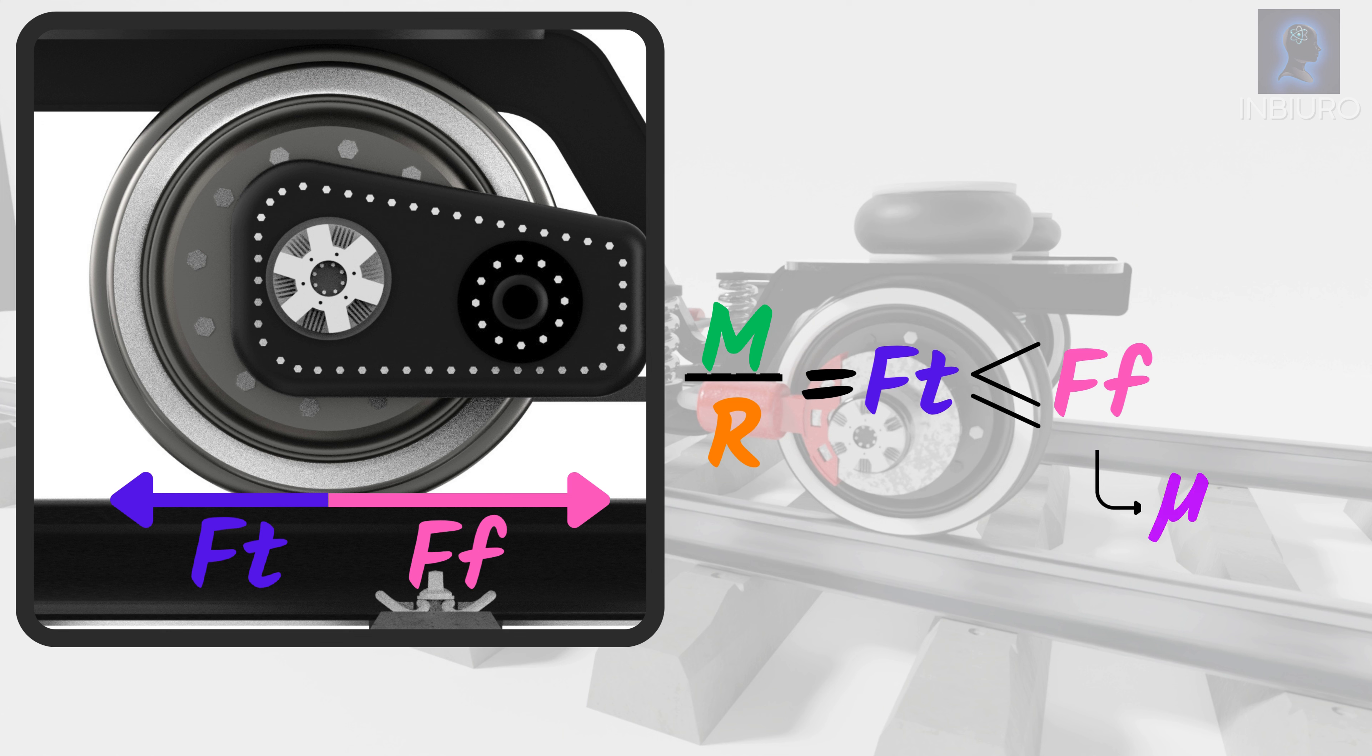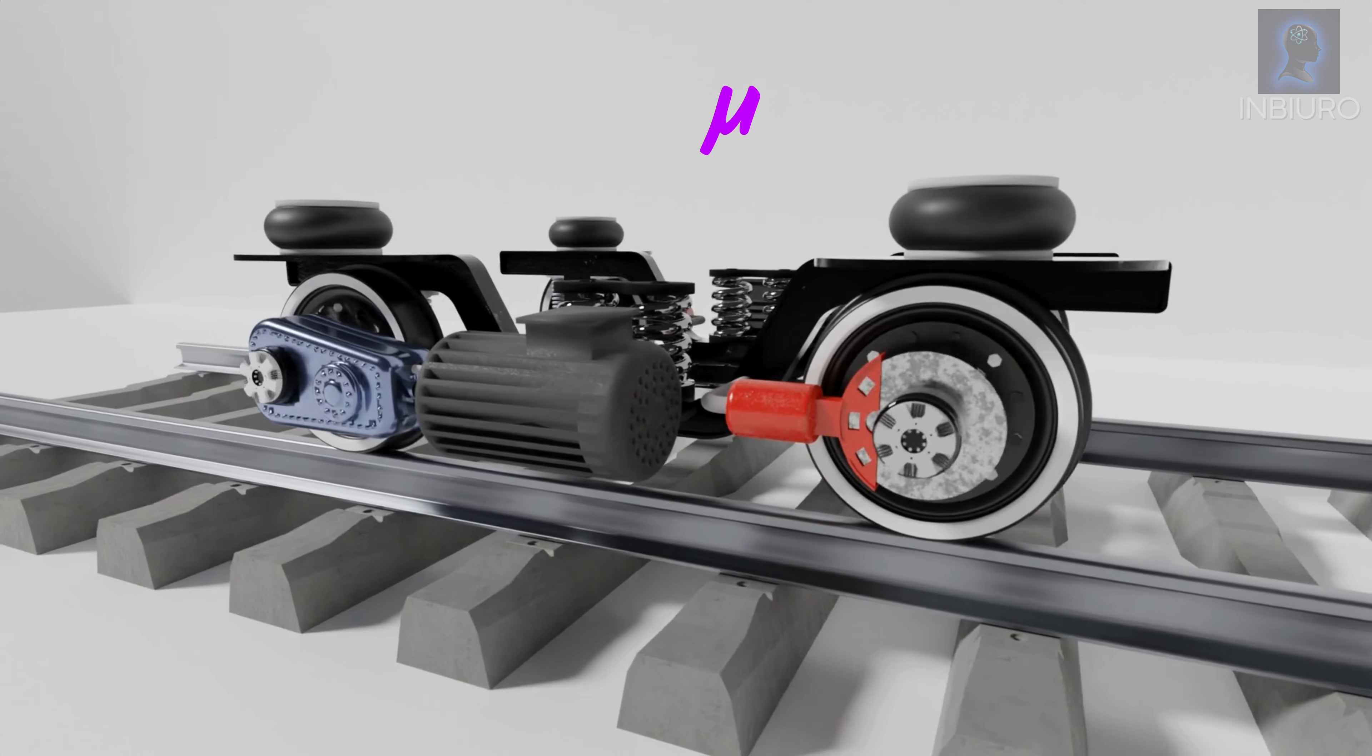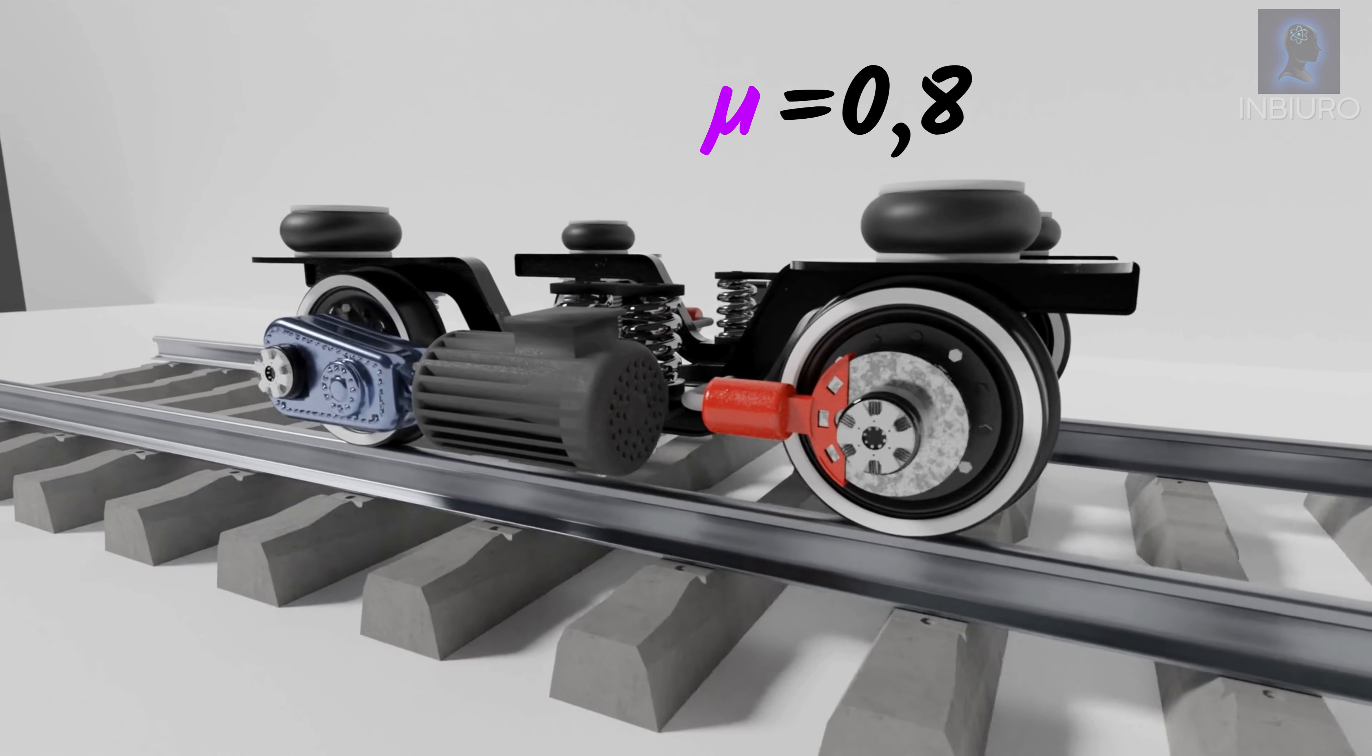The force of friction equals the coefficient times vertical load on the axle. This is the friction coefficient which for steel on steel reaches nearly 0.8 at dry and clean laboratory conditions.